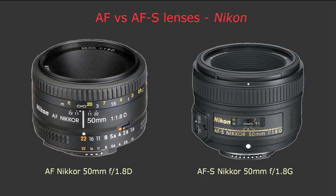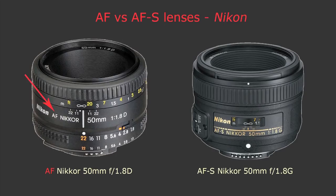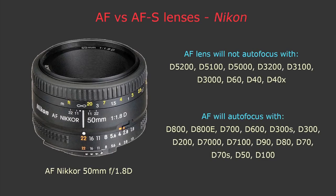That's not the only difference between G and D lenses. AF lenses use a screwdriver focus mechanism where focusing is controlled by the camera motor. AF-S lenses have a focus motor built into the lens — they are usually much quieter and faster in focusing. Also, camera bodies that are AF-S only will not autofocus with regular AF lenses. You can still mount the lens but you'll have to focus manually.